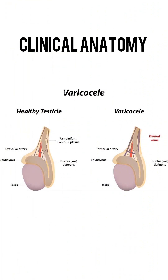Now let's talk about the clinical anatomy of the testis. Varicocele is a medical condition characterized by the enlargement of veins within the scrotum. It is produced by dilation of the pampiniform plexus and is usually left-sided, possibly because the left testicular vein is longer than the right. The left testicular vein enters the left renal vein at a right angle, and is crossed by the colon, and so can be compressed when the colon is loaded.